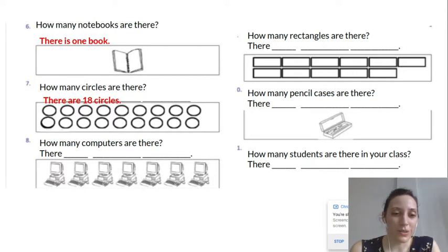How many computers are there? These are very old computers. They probably look much different than yours. One, two, three, four, five, six, seven. What is the answer? There are seven computers.